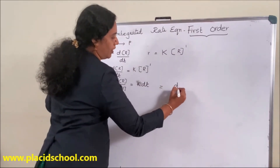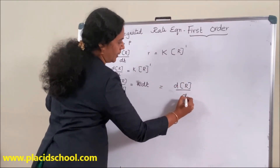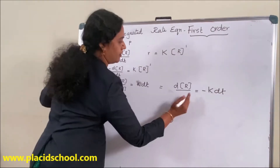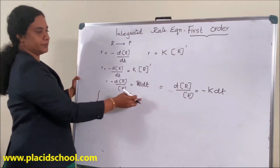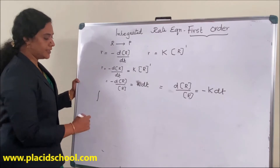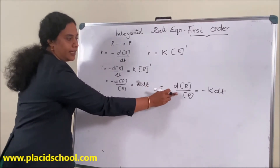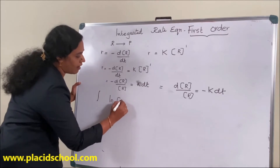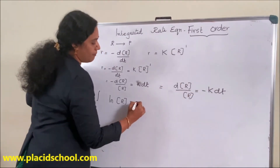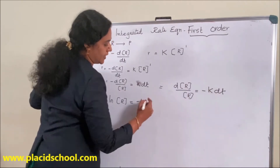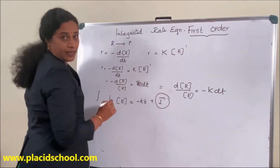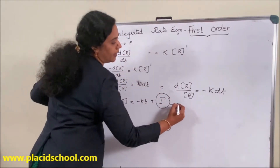Rearranging: minus dR by R equals K dt, which gives dR by R equals minus K dt. On integrating both sides, the integral of dR by R equals ln R, which equals minus K times t plus i, where i is the constant of integration. This is equation 1.